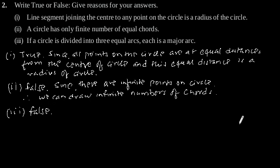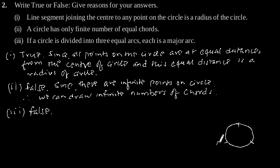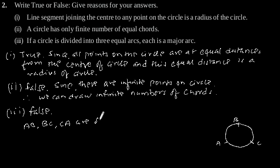To show this, let us consider a circle. Suppose this is a circle with three equal arcs A, B, and C. Now here we can observe that arc AB, arc BC, and arc CA are of the same length.